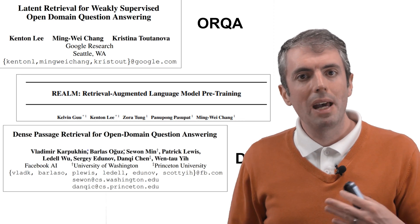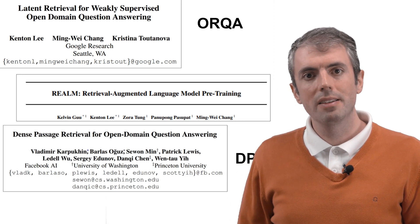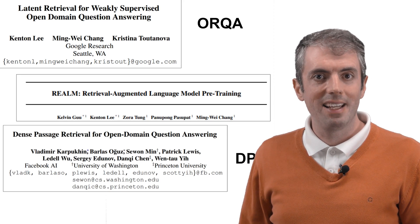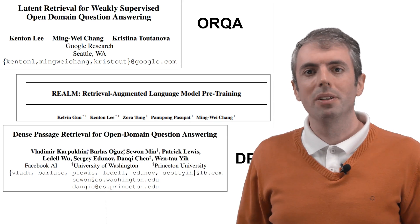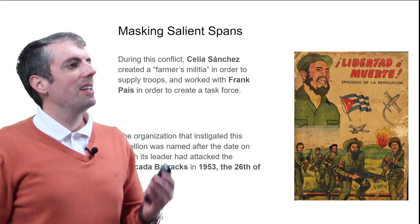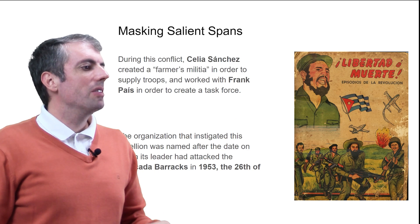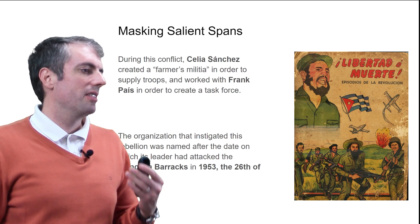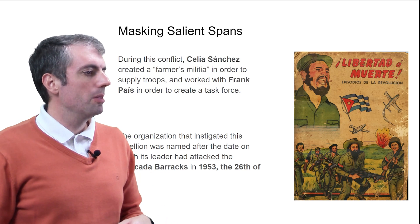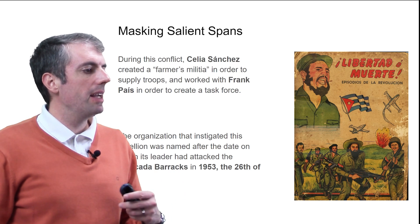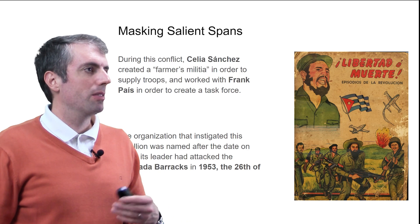Instead of BERT, which masks out a random 15% of tokens, they now mask named entities and dates. Let's see an example of what this means. Let's say you have text that says, During this conflict, Celia Sanchez created a farmers militia in order to supply troops and worked with Frank Pai to create a task force.